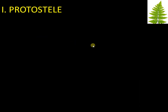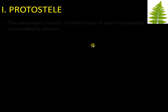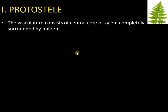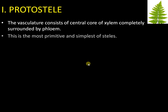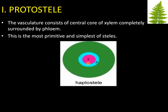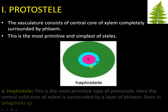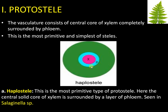Starting with the protostele: protostele consists of a central core of xylem that is completely surrounded by phloem. This is the most primitive type of stele. You can see right here the central core of xylem surrounded by phloem, and this type of stele is present in Selaginella.